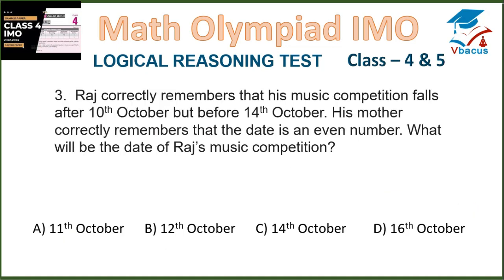Question 3. Raj correctly remembers that his music competition falls after 10th October but before 14th October. His mother correctly remembers that the date is an even number. What will be the date of Raj's music competition? After 10th and before 14th, we should not count 10th and 14th. So the dates are 11th, 12th and 13th October. Which one is even? So 12th October is even, which is in option B.